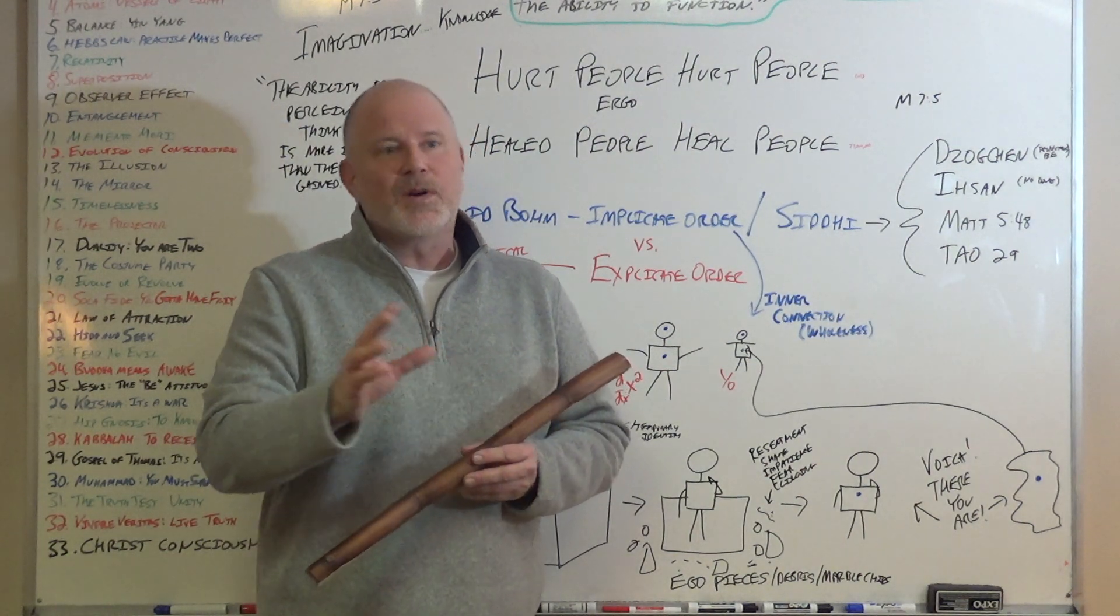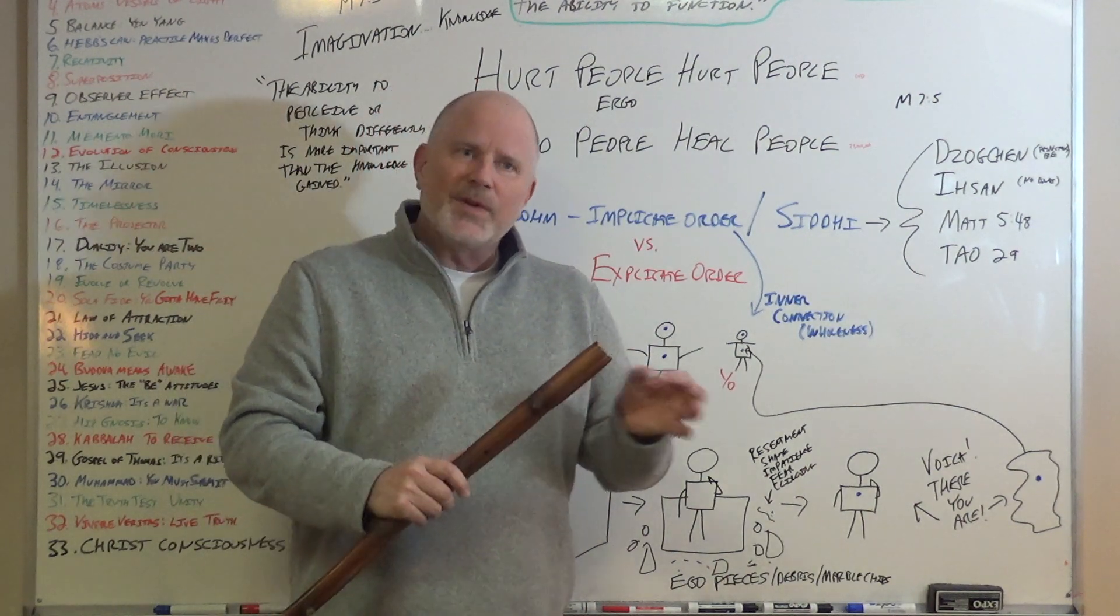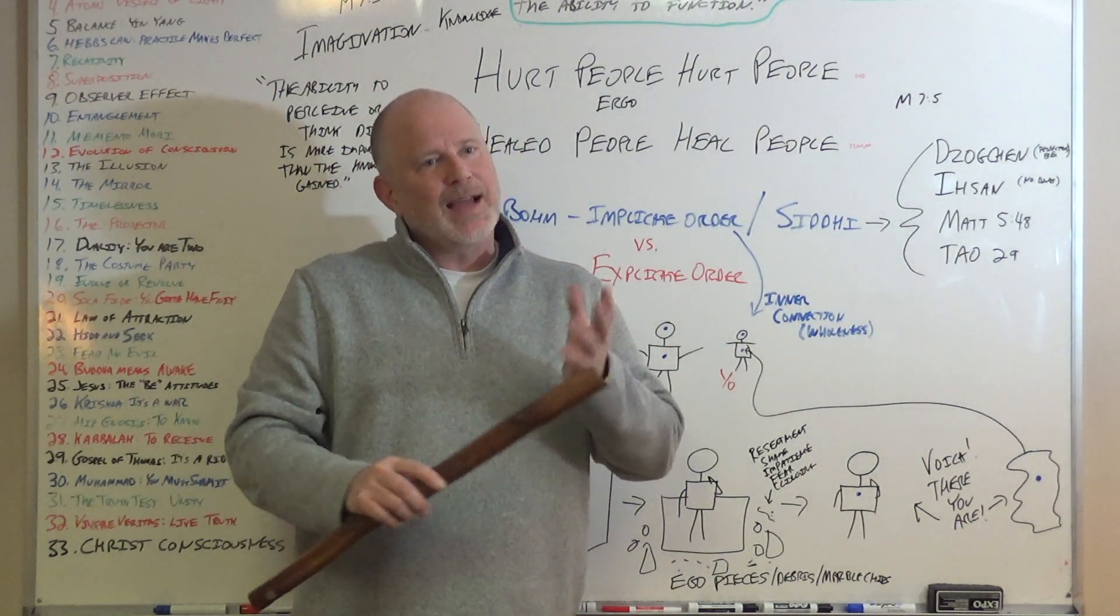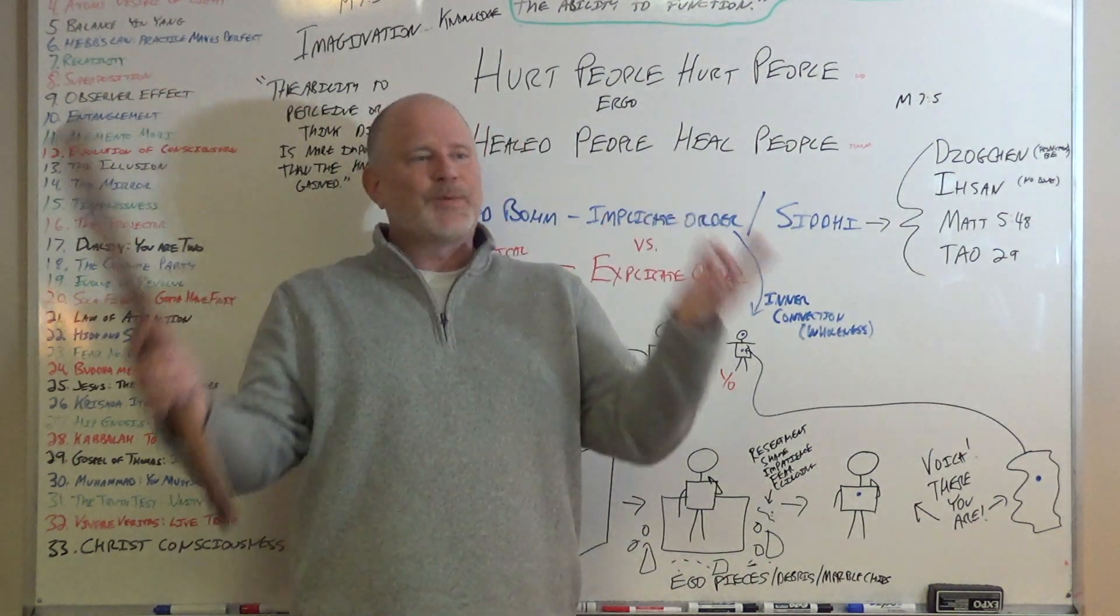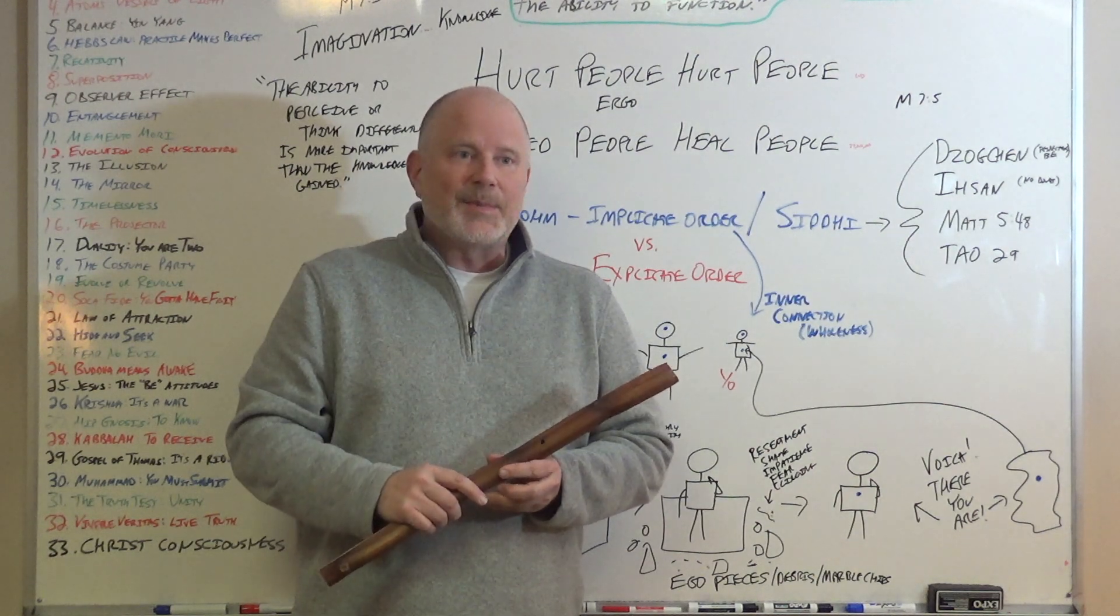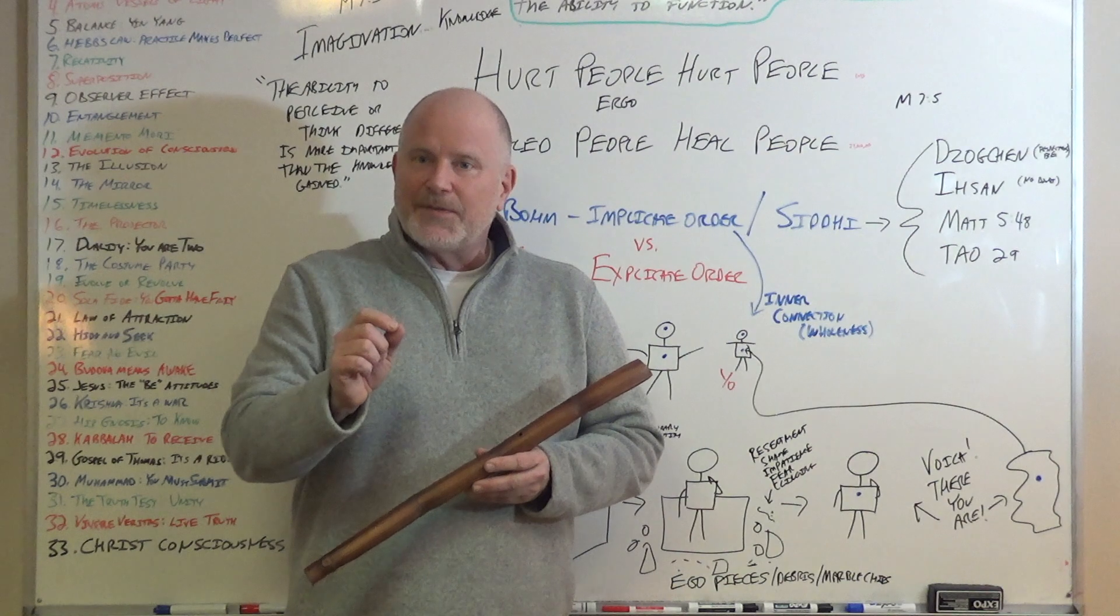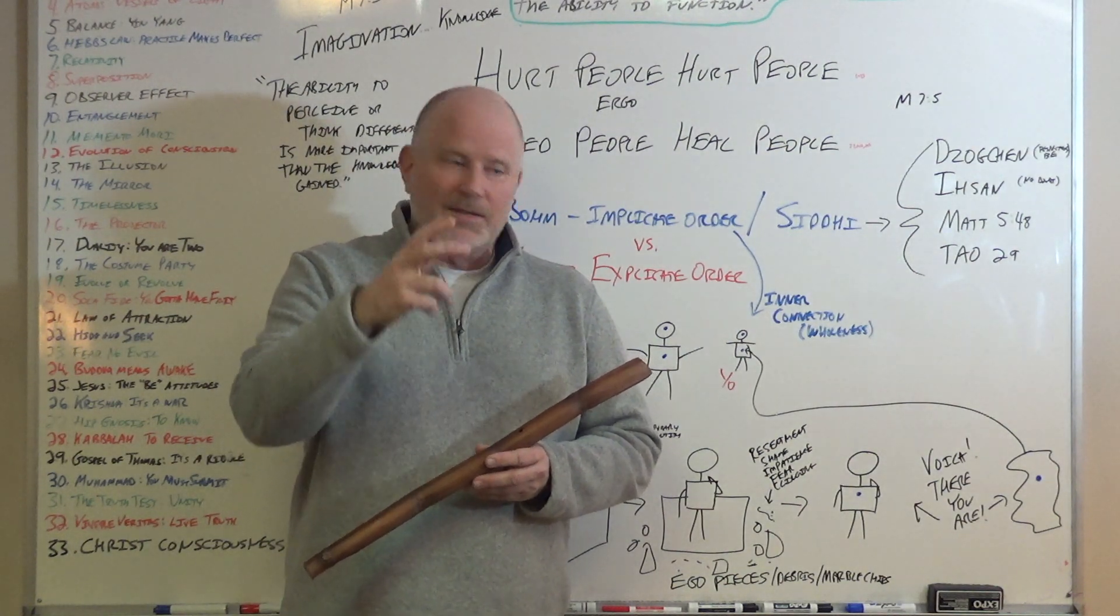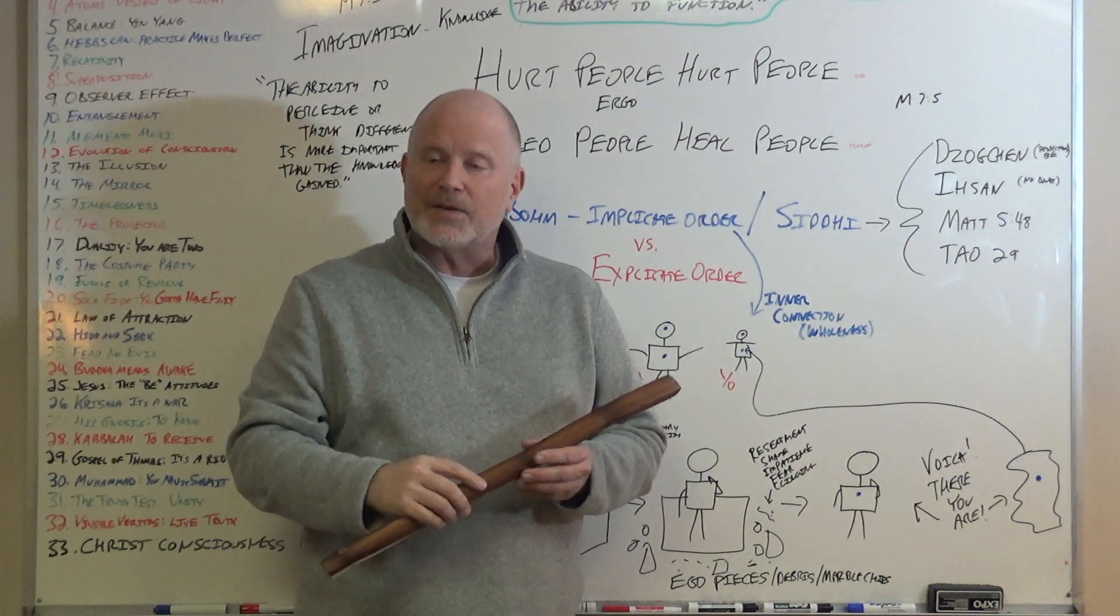David Bohm wrote a very interesting spiritual physics type book called Wholeness in the Implicate Order, in which he was bridging some of the gap between that which is the physical world and that which is the spiritual world. I'm going to go through the concept of what he calls Implicate Order and talk about how it's important to not judge another person, but much more important to remove the logs and the specks from our own eyes first.